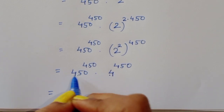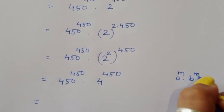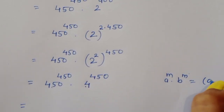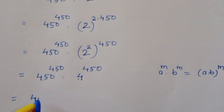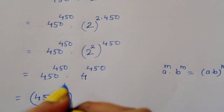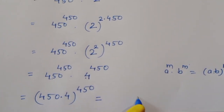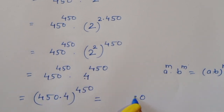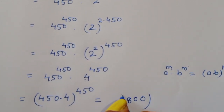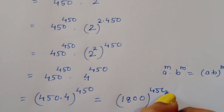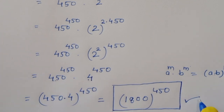So now we have 450^450 times 4^450. The powers are the same, so we apply the formula a^m × b^m = (a × b)^m. Using this formula, we get (450 × 4)^450. Multiplying 450 by 4: 4 times 0 is 0, 4 times 5 is 20, 4 times 4 is 16 plus 2 is 18 — so 1800^450. That is the solution for Method 1.